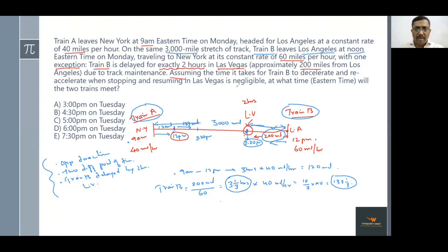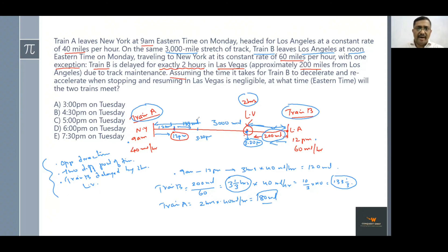Train B is delayed by two hours at Las Vegas. During those two hours, Train A was traveling alone: 2 hours × 40 miles per hour = 80 additional miles covered. So by the time Train B resumes from Las Vegas, Train A has also covered an additional 80 miles, and the time is now 5:20 PM.